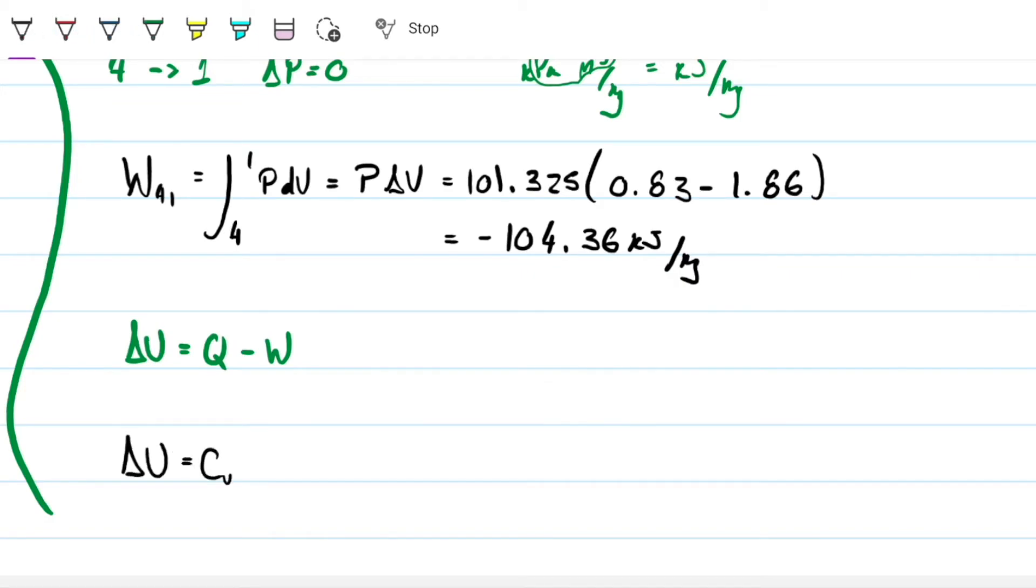So let's find out what's going on on delta U, and then we can conclude where our heat is going. So this is CV delta T. In this case, we have 0.718, but our delta T is 293, that's temperature 1, minus temperature 4, 656.7. So it gives us about approximately negative 261.14. So our delta U decreased.